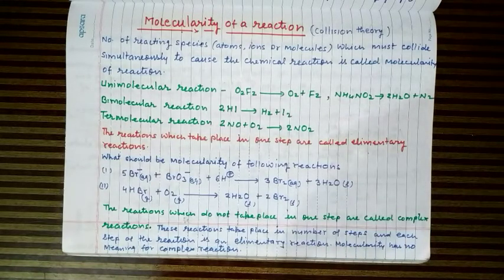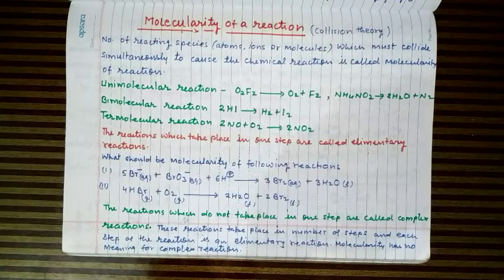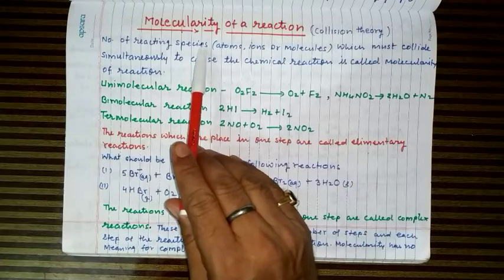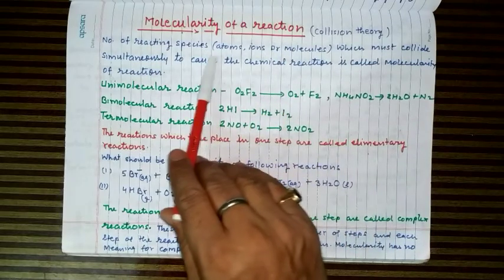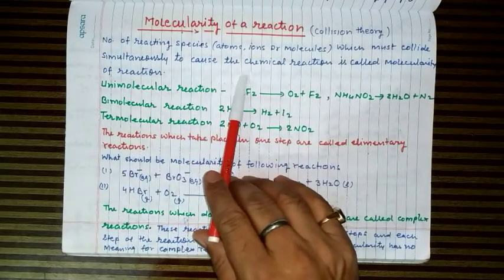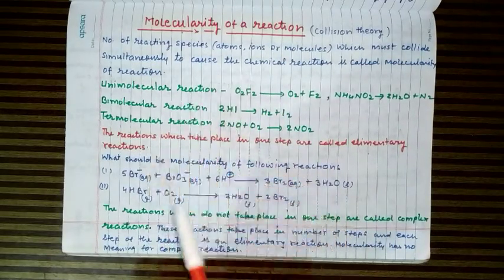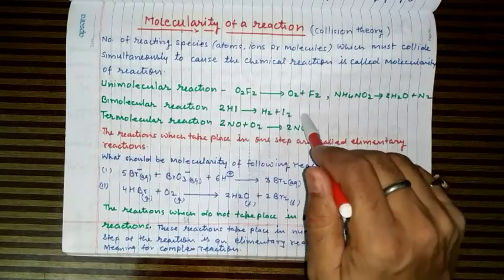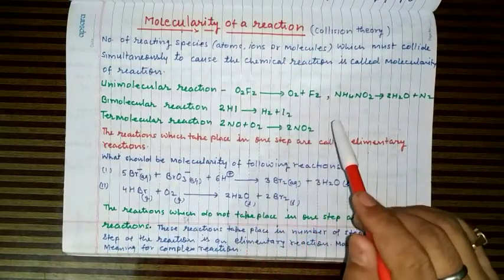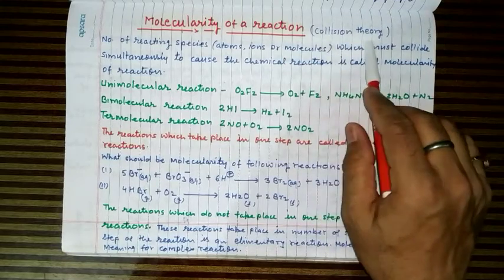How any reaction takes place and what are the steps involved can be predicted by the collision theory of reaction rate. According to collision theory, any reaction takes place only if the reacting species come closer and collide with each other. Another concept was introduced to explain the number of reactant molecules which are colliding simultaneously to cause the chemical reaction — this is called molecularity of the reaction, a theoretical concept given by collision theory.